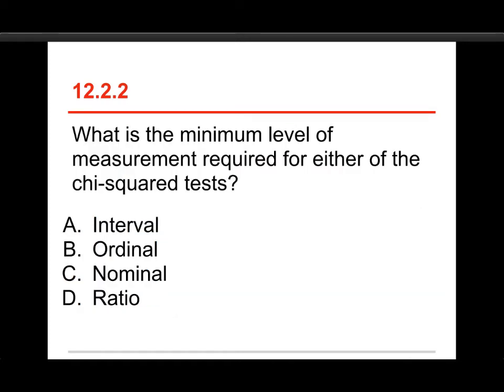Number two, what is the minimum level of measurement required for either of the chi-squared tests? Interval, ordinal, nominal, or ratio? Well, it's nominal. It's the lowest version of our level of measurement that only indicates the category that the observation is in.